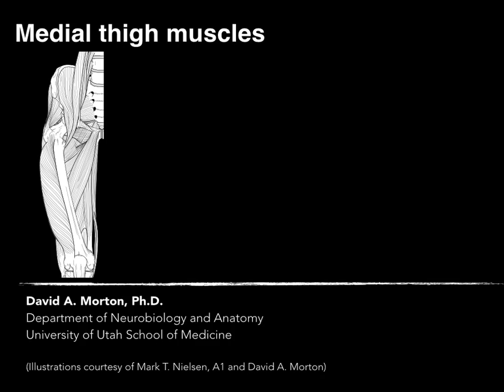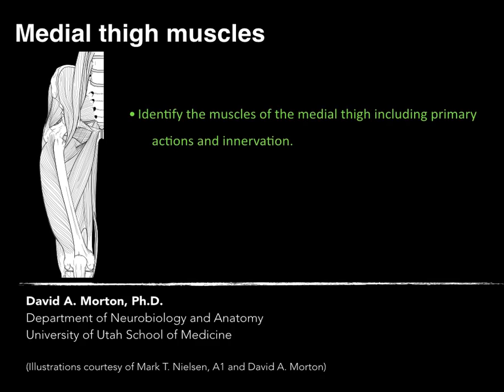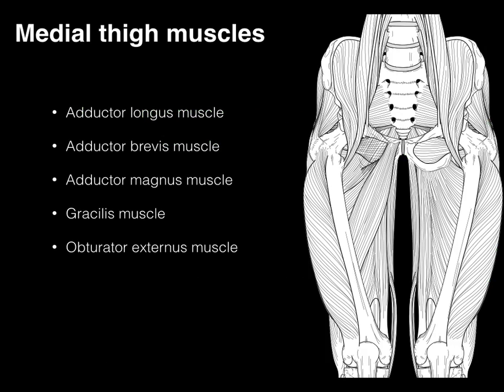Let's talk about medial thigh muscles. We're going to identify the muscles of the medial thigh — think adductors — including primary actions and innervation. Here we have our five medial thigh muscles, or muscles that make up the medial compartment of the thigh: our three adductors, the gracilis, and the obturator externus, which I'm not going to be focusing on so much in this lecture.